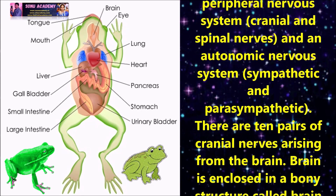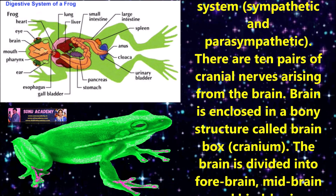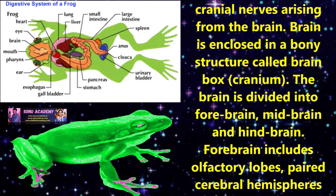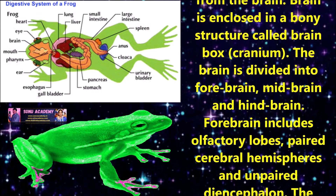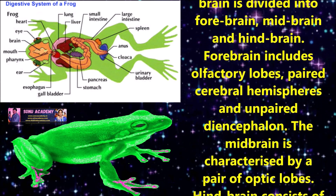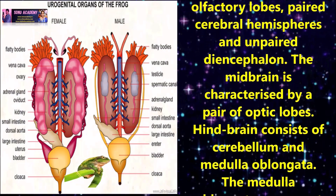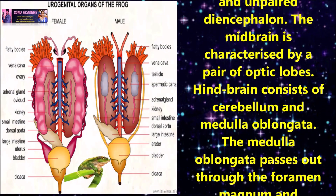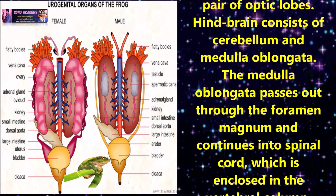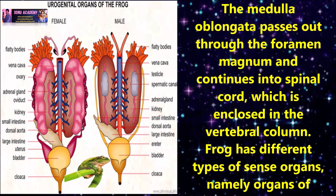There are 10 pairs of cranial nerves arising from the brain. The brain is enclosed in a bony structure called the brain box. The brain is divided into forebrain, midbrain, and hindbrain. The forebrain includes olfactory lobes, paired cerebral hemispheres, and unpaired diencephalon. The midbrain is characterized by a pair of optic lobes. The hindbrain consists of the cerebellum and medulla oblongata. The medulla oblongata passes through the foramen magnum and continues into the spinal cord, which is enclosed in the vertebral column.